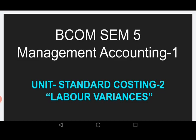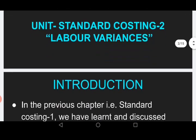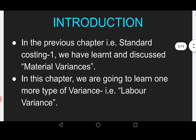Today we are going to discuss why these two chapters are equal and why you need to memorize the material variance chapter before starting this one. Starting with the introduction — in the previous chapter, Standard Costing 1, we learned material variances. In this chapter we are going to learn one more type of variance: labor variance. In our syllabus there are only two types of variances — material and labor.